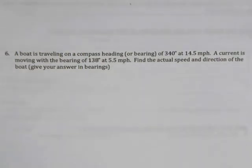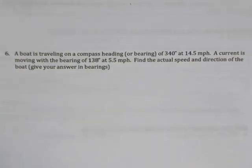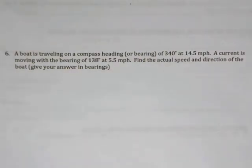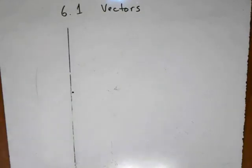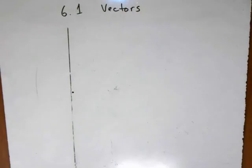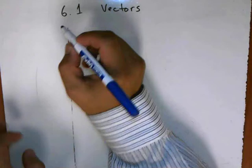A boat is traveling on a compass heading or bearing of 340 degrees at 14.5 miles per hour. A current is moving with the bearing of 138 degrees at 5.5 miles per hour. Find the actual speed and direction of the boat and give your answer in bearings. This is a much more difficult problem. The way we are going to handle it uses a few steps and strategies. First, we're going to draw a picture.